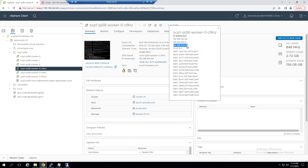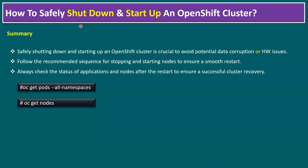To summarize: we've covered how to safely shut down and start up an OpenShift cluster. The shutdown sequence is: stop applications → shut down worker nodes → shut down infrastructure nodes → shut down master nodes. The startup sequence is the reverse: power up master nodes → power up infrastructure nodes → power up worker nodes → validate application pod health and ensure all OpenShift cluster node statuses are in Ready state.